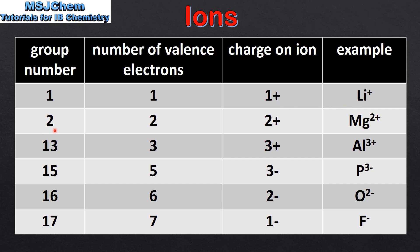Next is group 2. Elements in group 2 have 2 valence electrons. They can lose these 2 valence electrons to form 2+ ions. An example is the magnesium 2+ ion. Group 13 elements have 3 valence electrons. They can lose these 3 valence electrons to form 3+ ions.